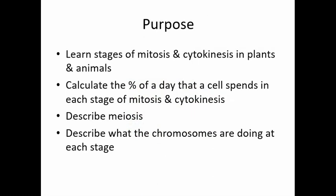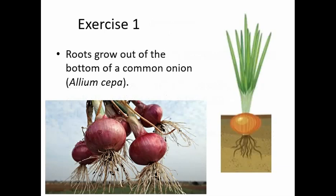Some of this is covered in other videos. This will just focus on the root tip of the onion and the whitefish blastula. From this diagram and picture we can see that roots grow out of the bottom of a common onion with the binomial name Allium cepa.